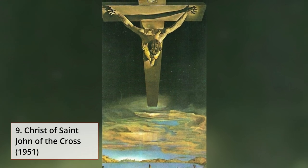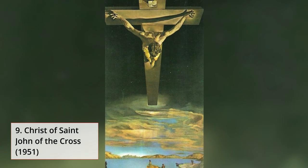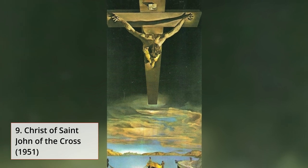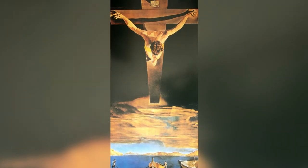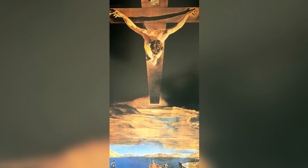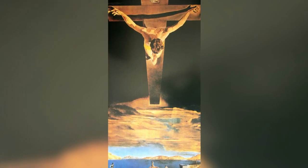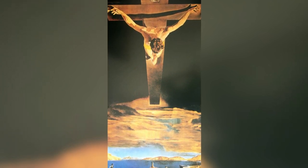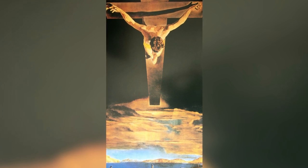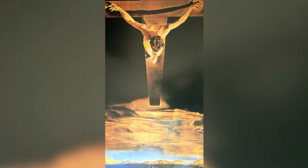9. Christ of St. John of the Cross, 1951. Artwork that represents Jesus Christ on the cross floating above a body of water under a black sky, complete with a boat and fishermen. It depicts the crucifixion without nails, blood, and a crown of thorns.